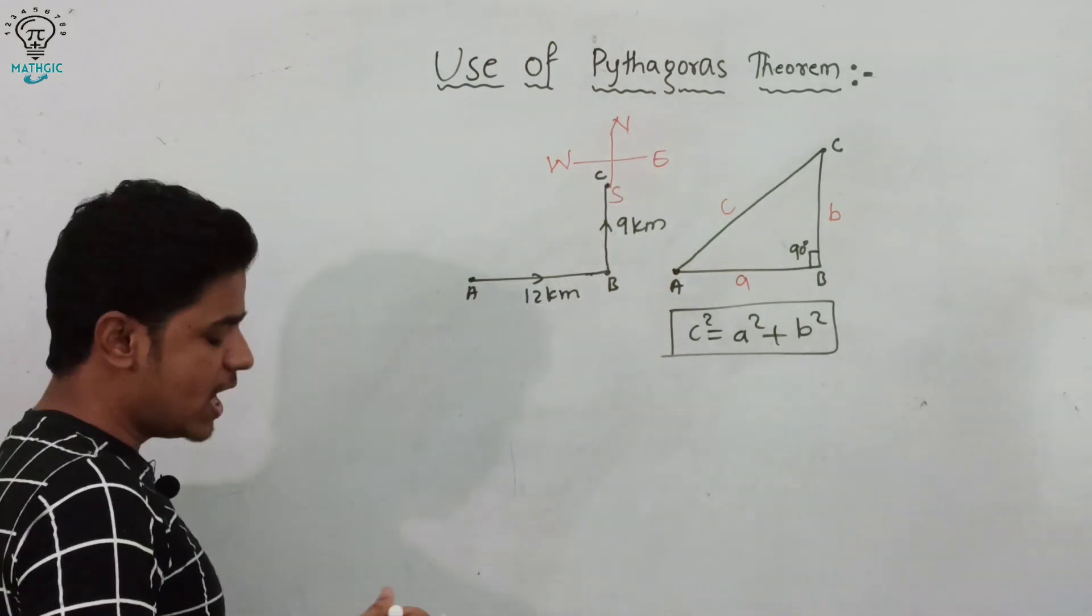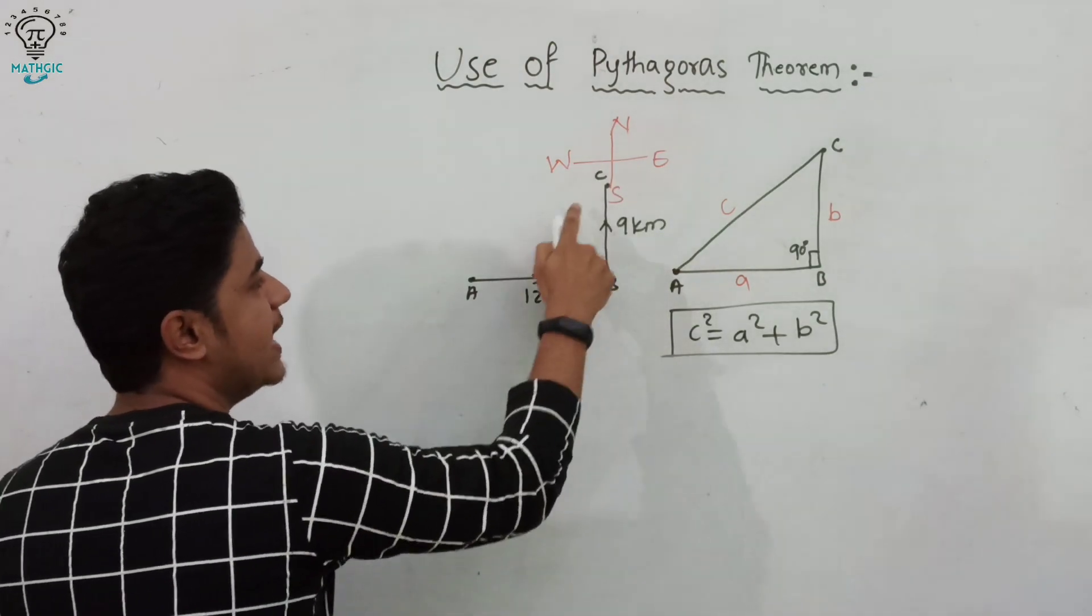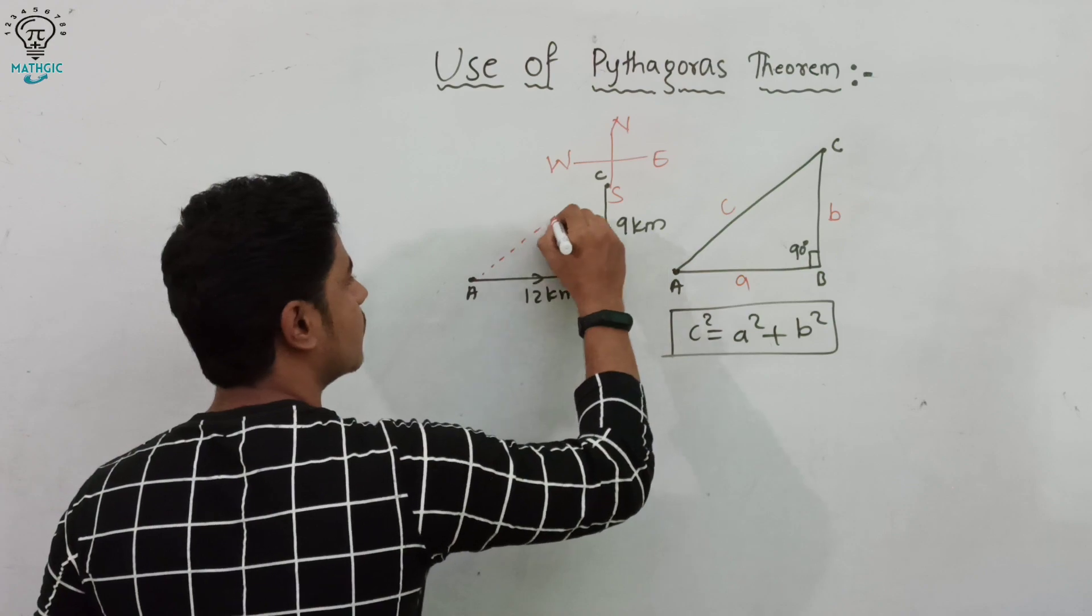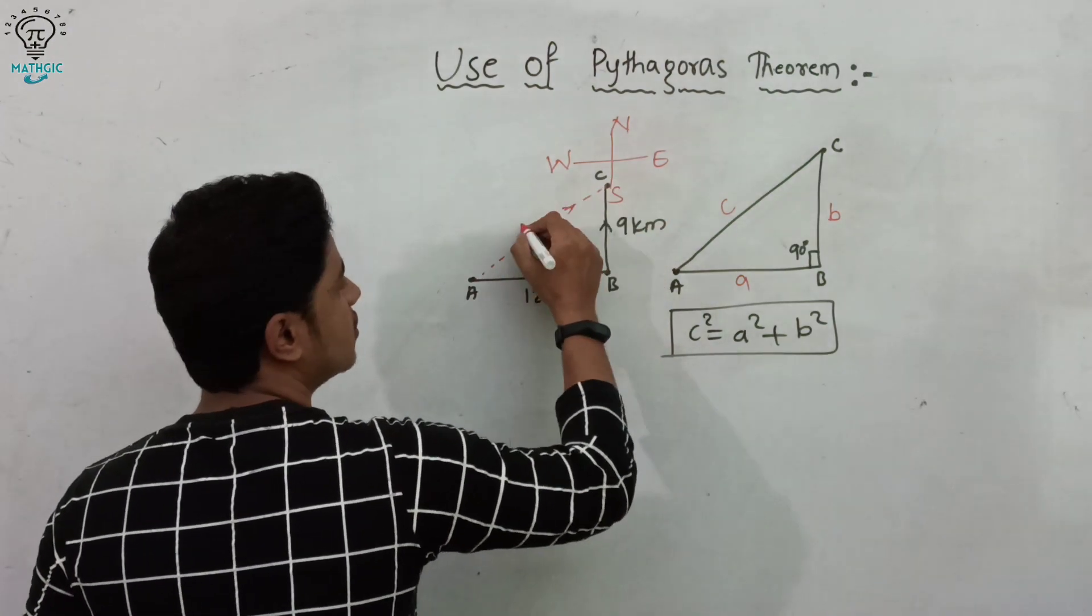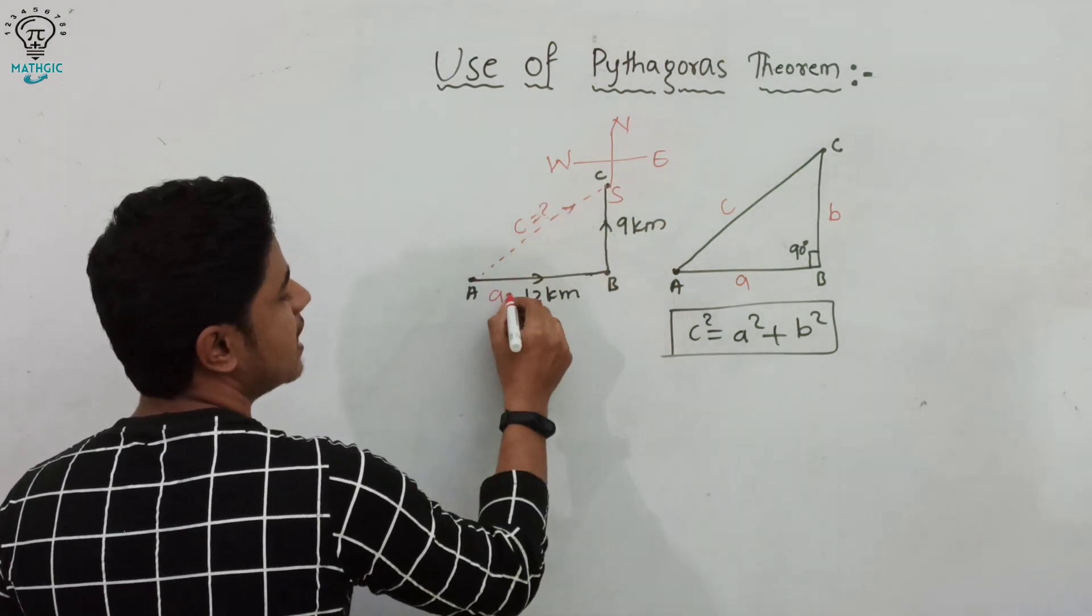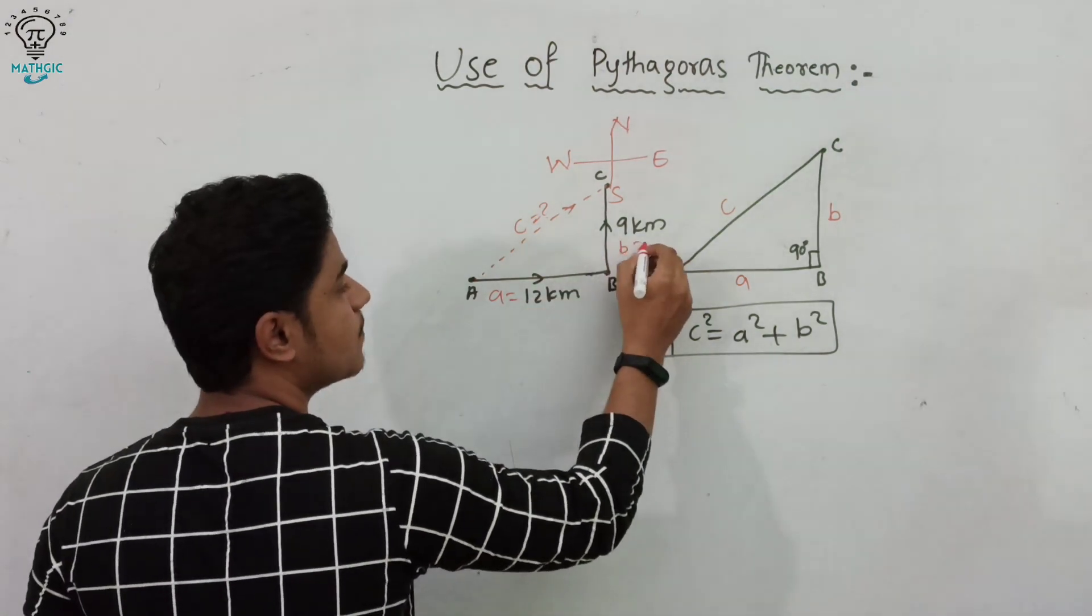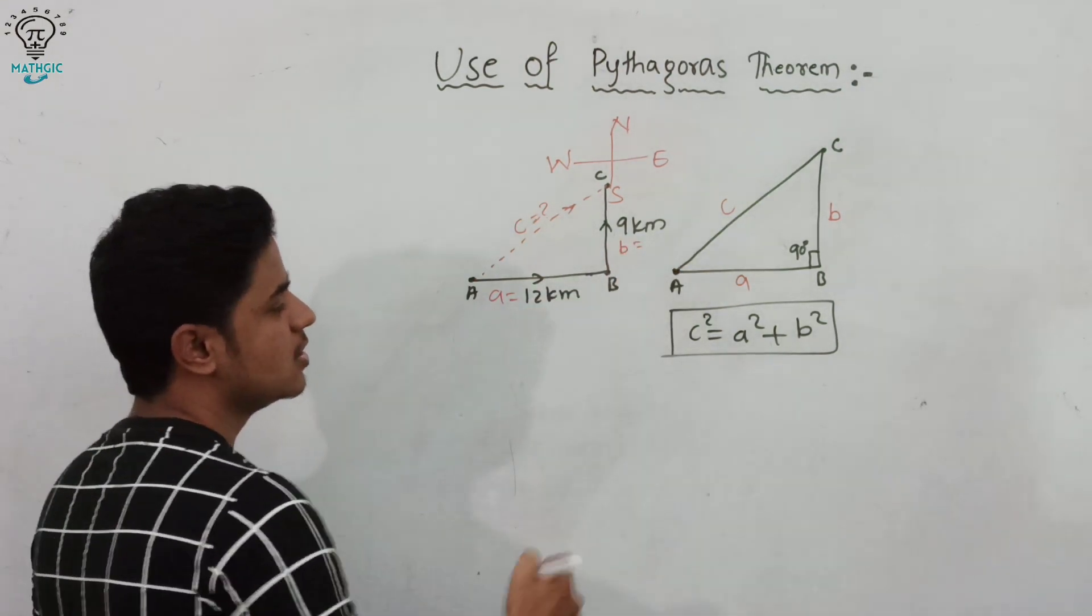We have to find the distance from A to C. So let's join. This is c that we have to find, this is b, and this is a. Now Pythagorean theorem says c² = a² + b².